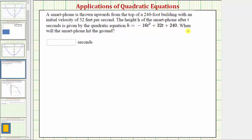The important thing here to recognize is that when the smartphone is on the ground, the height is equal to zero. So h equals zero means the phone is on the ground. To answer this question, we need to set h equal to zero and solve for t.